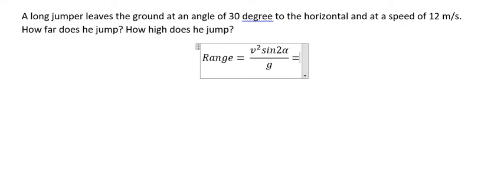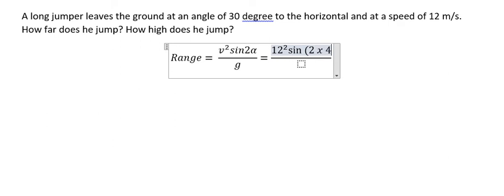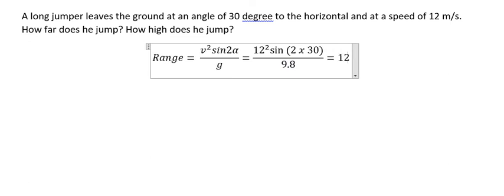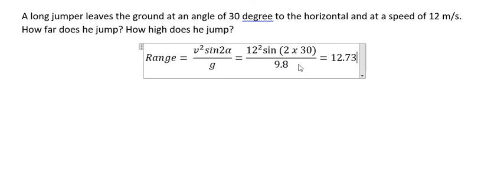We input the numbers here. Velocity is 12 meters per second and sine 2 times 30 degrees. Divide by 9.8 and we get about 12.73 meters.